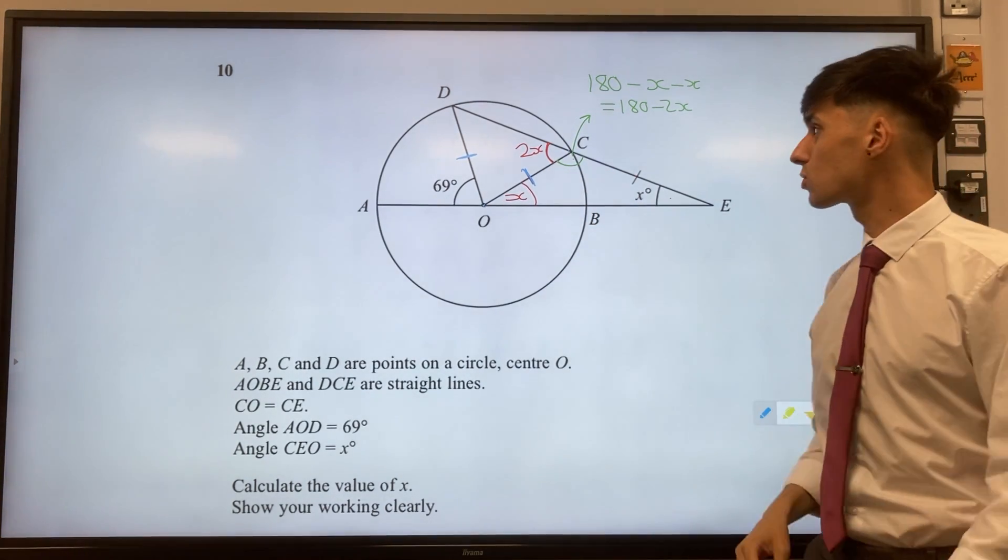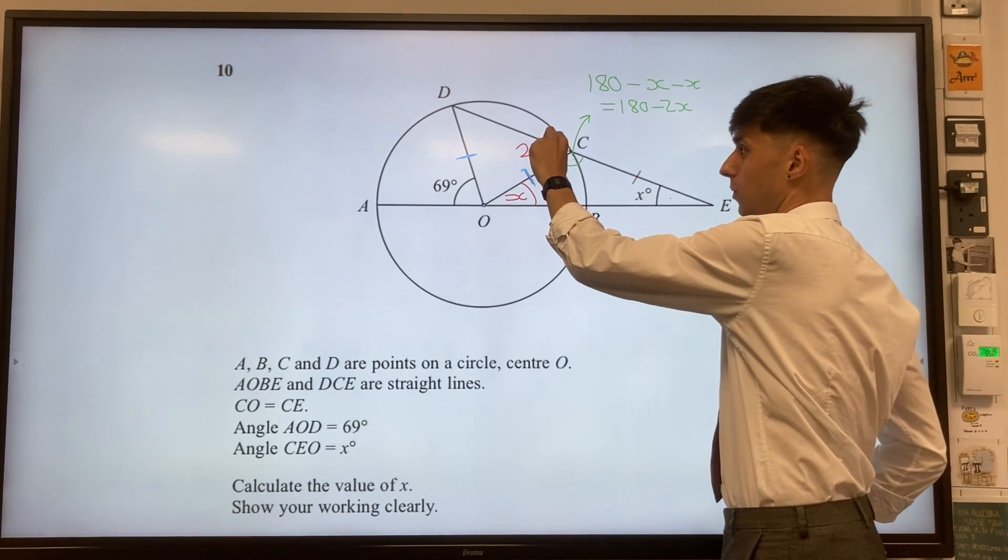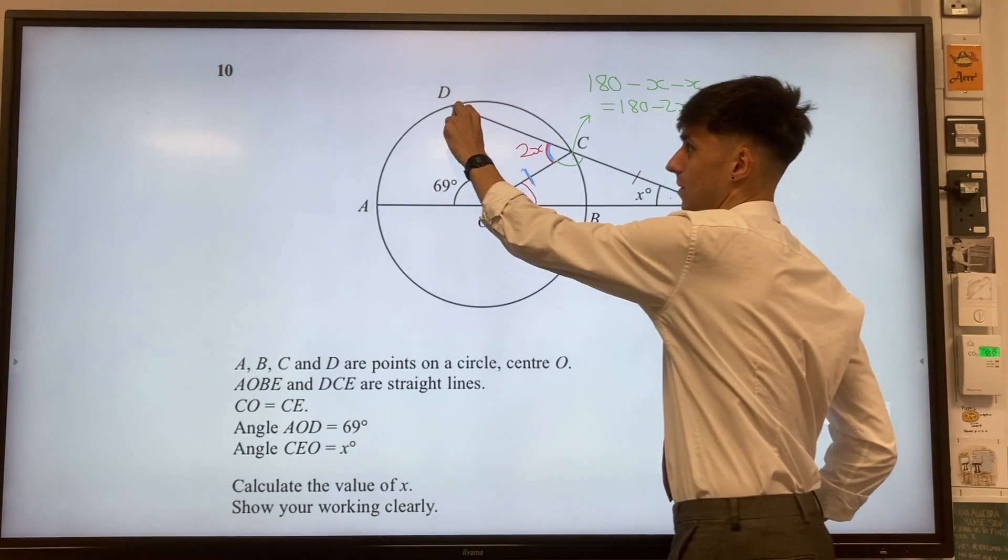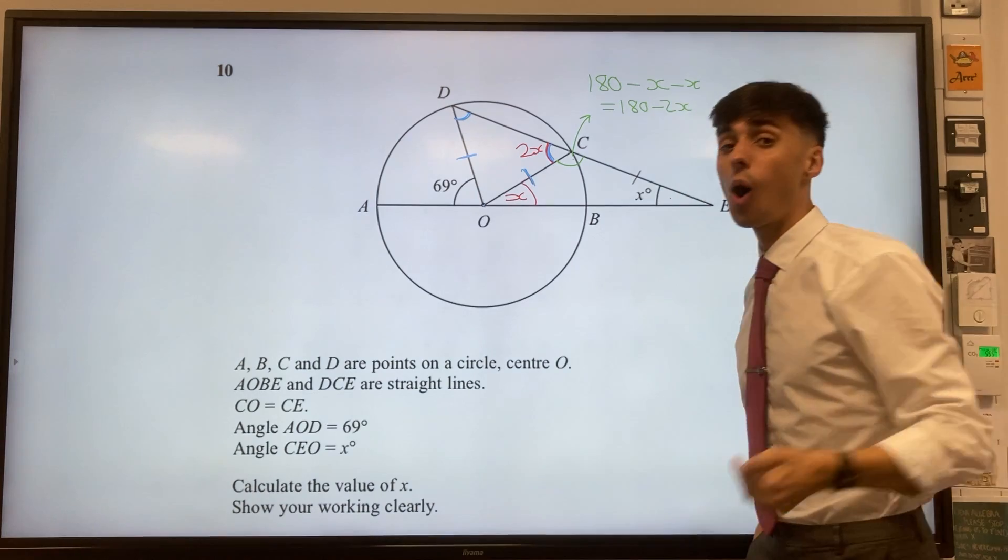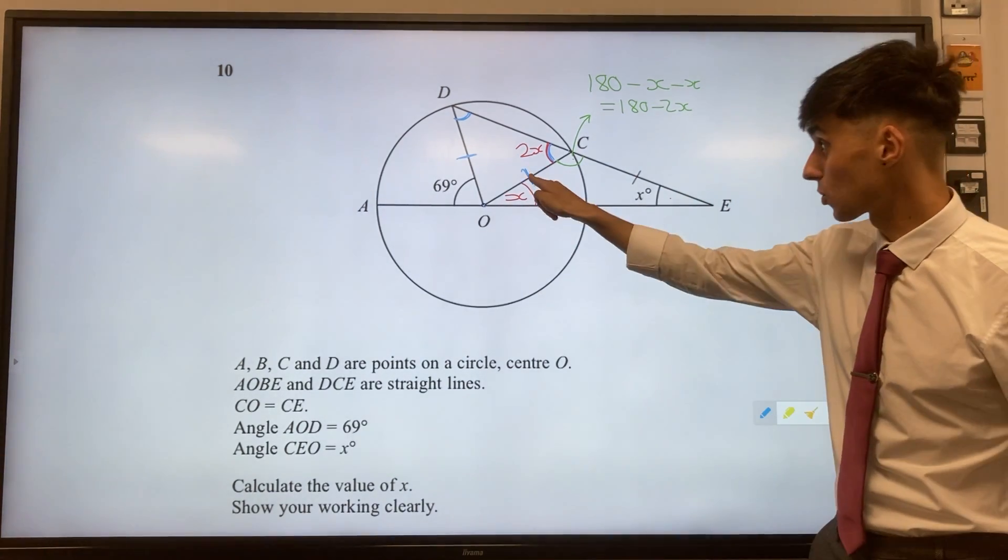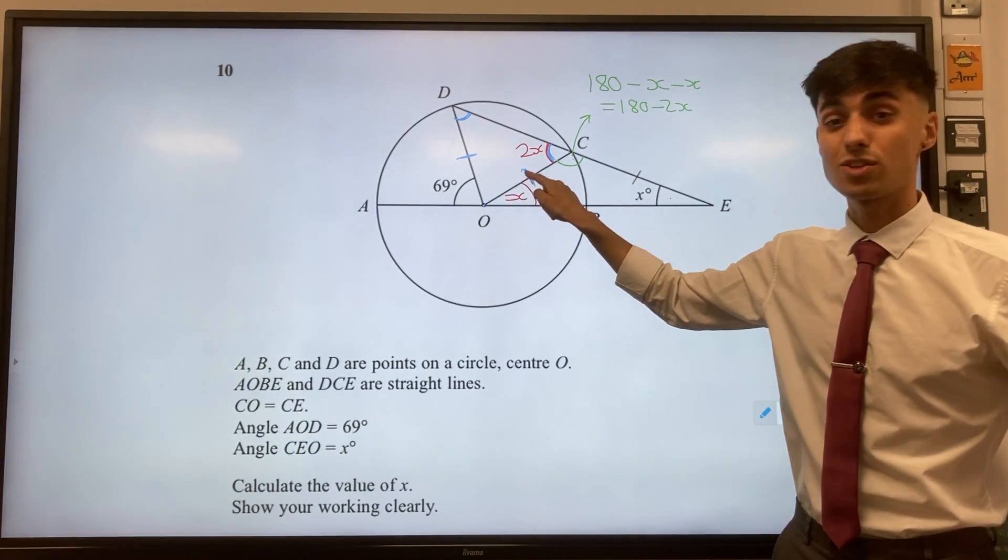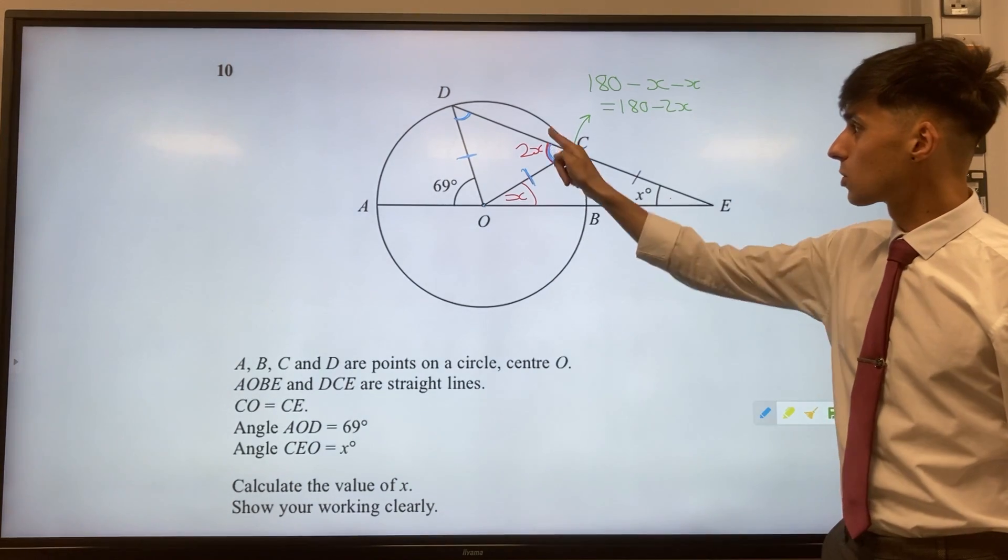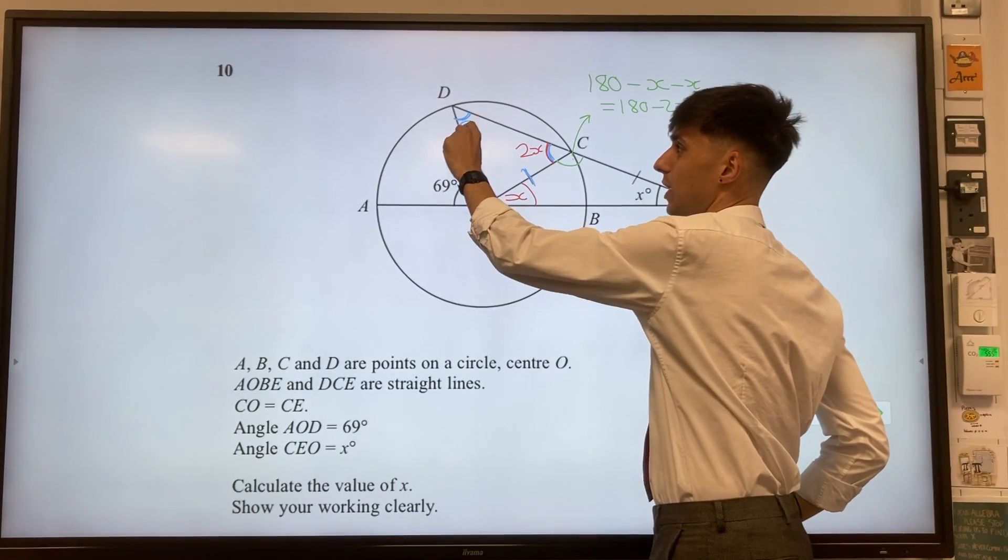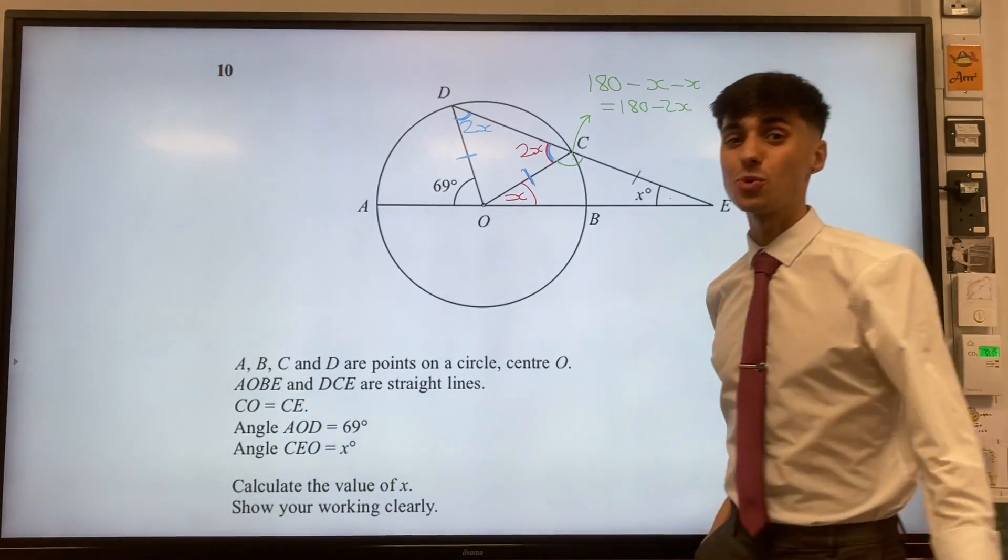And now continuing to use more angle facts. Well this angle here and this angle here are base angles of an isosceles triangle thanks to the radii. So if this is 2x, well then this angle here also must be 2x.